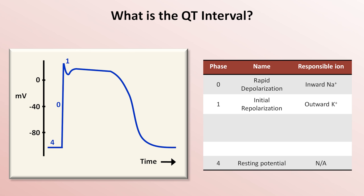Then there is a plateau phase, or phase 2, which occurs when inward calcium flow balances outward potassium flow. And finally, there is complete repolarization back to the resting potential due to a continuation of outward potassium current, which is no longer counterbalanced by calcium. The QT interval represents the time between phase 0 and the end of phase 3 as averaged across all of the ventricular myocardium.